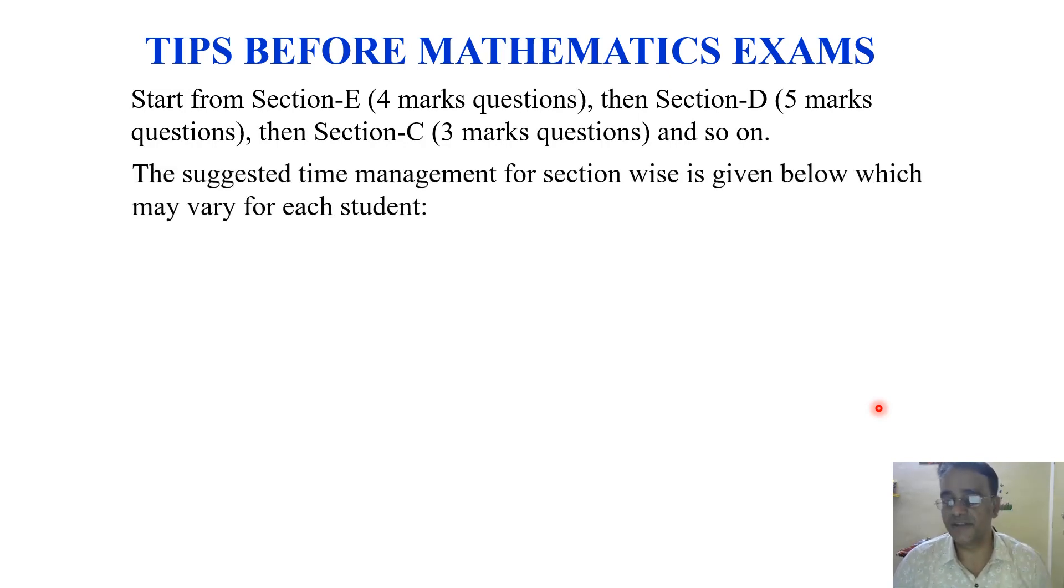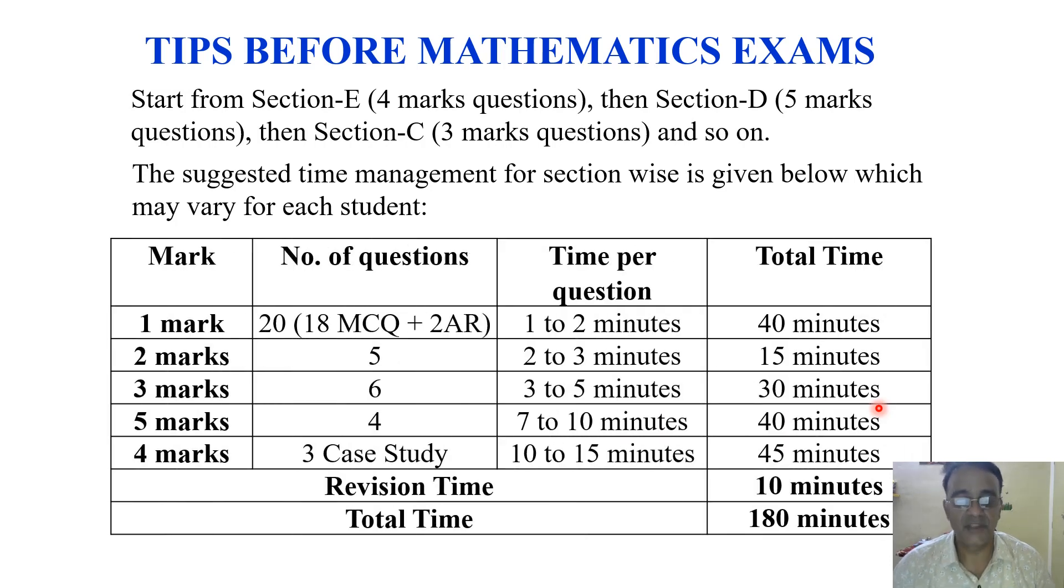Let us start with one mark questions. There are total 20 questions - 18 general MCQs and two assertion reasoning based questions. Maximum two minutes per question, so total 40 minutes. For two marks questions, there are five questions, two to three minutes maximum, so 15 minutes. For three marks questions, there are six questions, three to five minutes each, so 30 minutes.